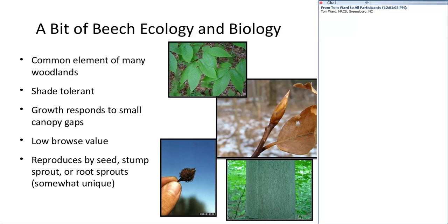Let's start with a little beech ecology and background. American beech is common in many woodlands — sometimes I forget just how common it is when we think about northeastern hardwoods. Northern hardwoods means beech, birch, and maple forest. Beech is a very common element in our northern forests, common from the maritime provinces in Canada south well into the mid-Atlantic states.